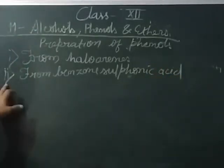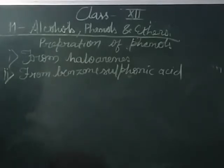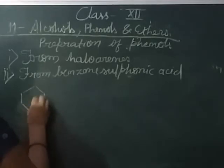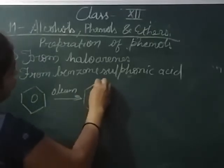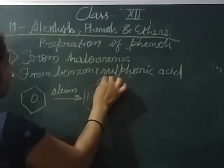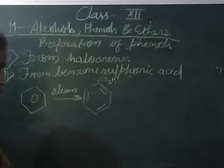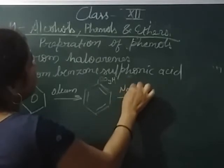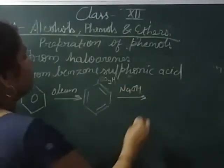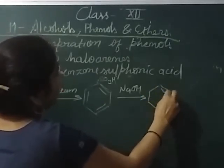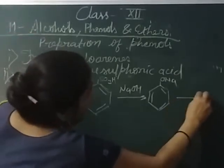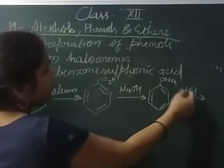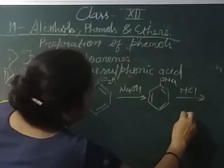The second method is from benzene sulfonic acid. In this method, benzene first reacts with oleum to form benzene sulfonic acid. This sulfonic acid then reacts with fused NaOH to form sodium phenoxide. When sodium phenoxide is acidified by reacting with acid, it finally converts into phenol.